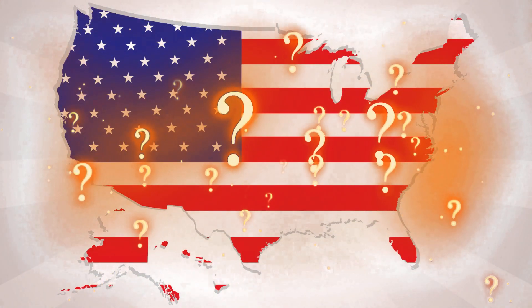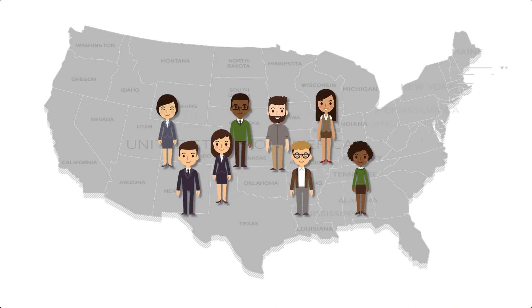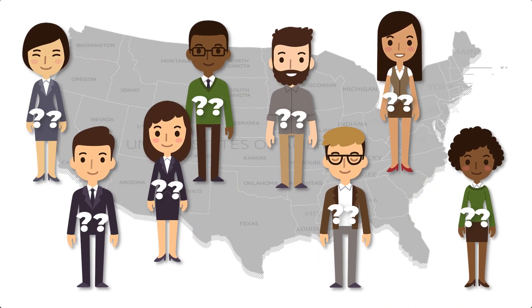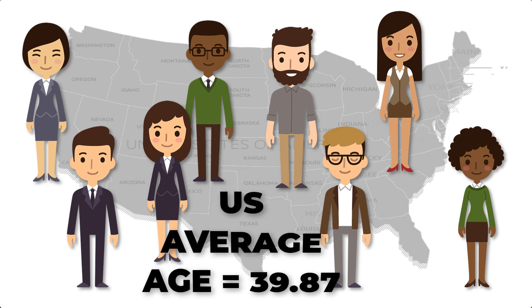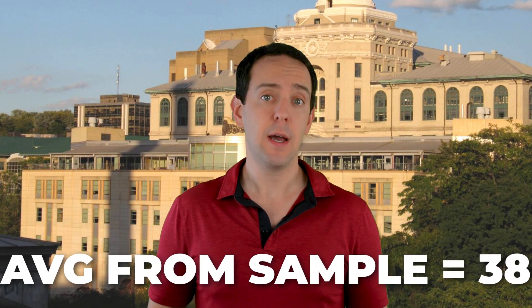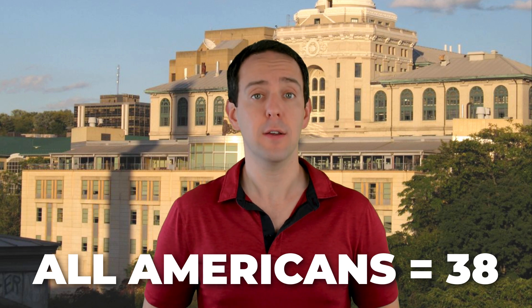When I want to know something like the average age of the US population, I suppose I could go and ask every single person what their age was, but that would be an incredibly difficult task. Instead, what I might do is pull together a random sample of a few thousand Americans, ask them their age, and then use that estimate as a guess about the entire US population. For example, if I asked a thousand Americans their age and the average for that sample was 38 years, I might then conclude that the average age of all Americans is also 38 years.